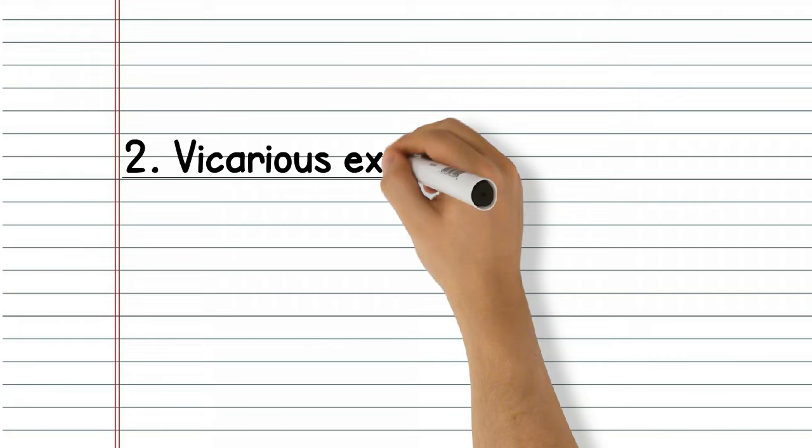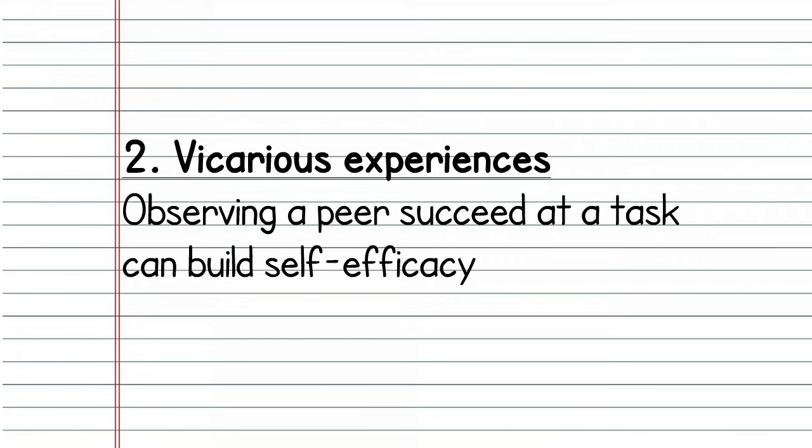Number two: vicarious experience. Observing a peer succeed at a task can build self-efficacy, while the opposite is also true. We often contrast ourselves against our peers and use our peers as a point of reference in an attempt to measure ourselves. The phrase 'anything you can do I can do better' is a classic but slightly extreme example of vicarious experience, in which someone believes they can complete a task just because a peer can. This is why doing things as a group can encourage people to commit to behaviours they wouldn't usually commit to on their own.